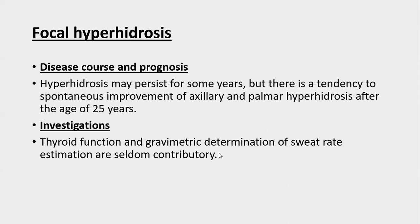Disease course and prognosis: hyperhidrosis may persist for some years but there is a tendency to spontaneous improvement of both axillary and palmar hidrosis after 25 years of age — it is mainly a disease starting from puberty and ending around 25 to 26 years. Investigations should include thyroid function tests and gravimetric determination of sweating. For unusual hyperhidrosis, exclusion of phaeochromocytoma and uncontrolled diabetes mellitus should be performed.